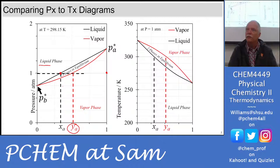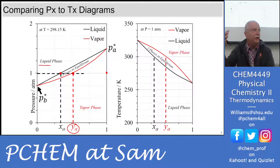The vapor phase sampled above that boiling liquid has the y_A composition — enriched in substance A because A has a higher natural vapor pressure. So in the vapor phase you're enriched in A. Now we take this PX diagram, which we don't use as much on the academic chemistry side, and move to using temperature on the y-axis more frequently.